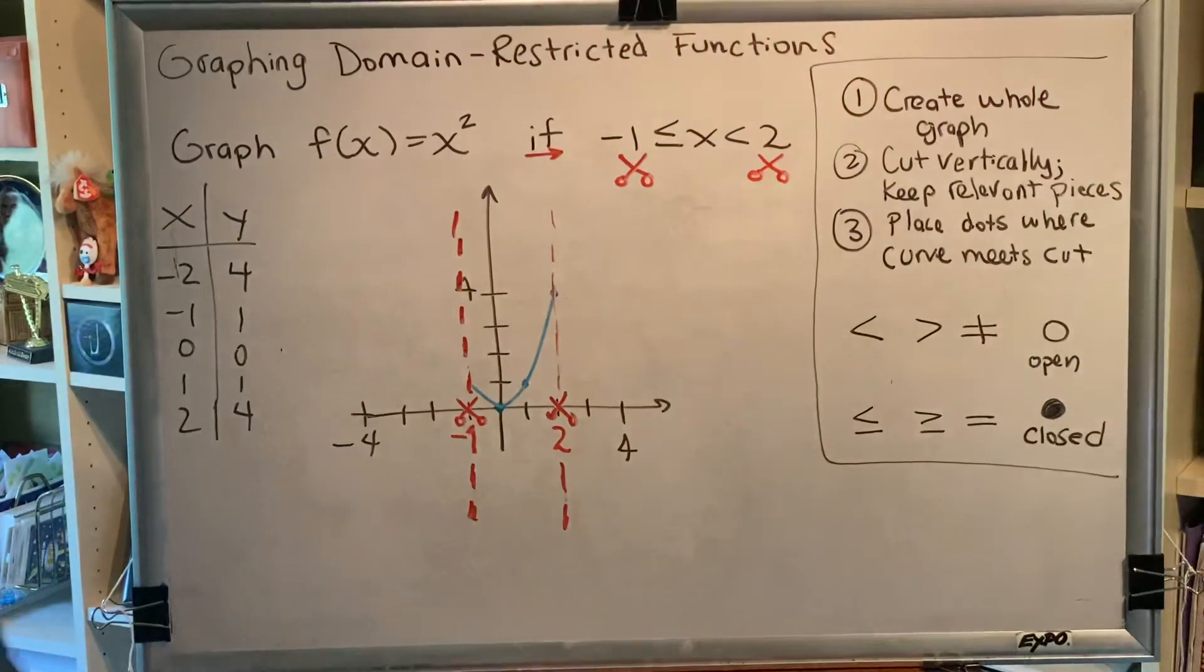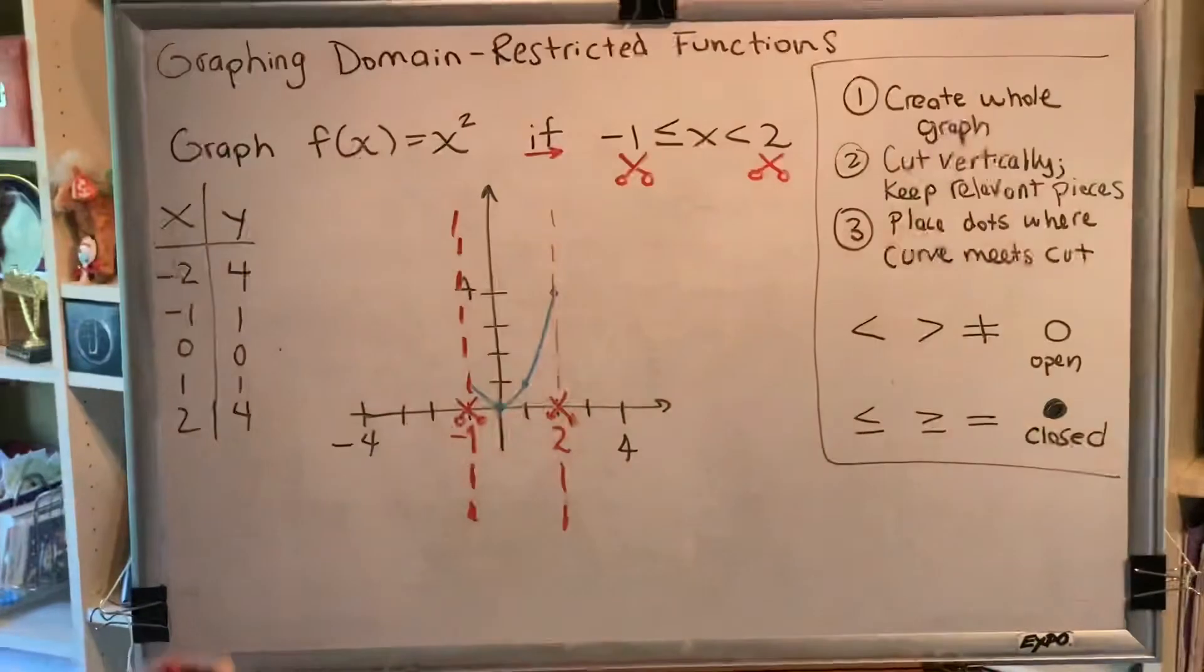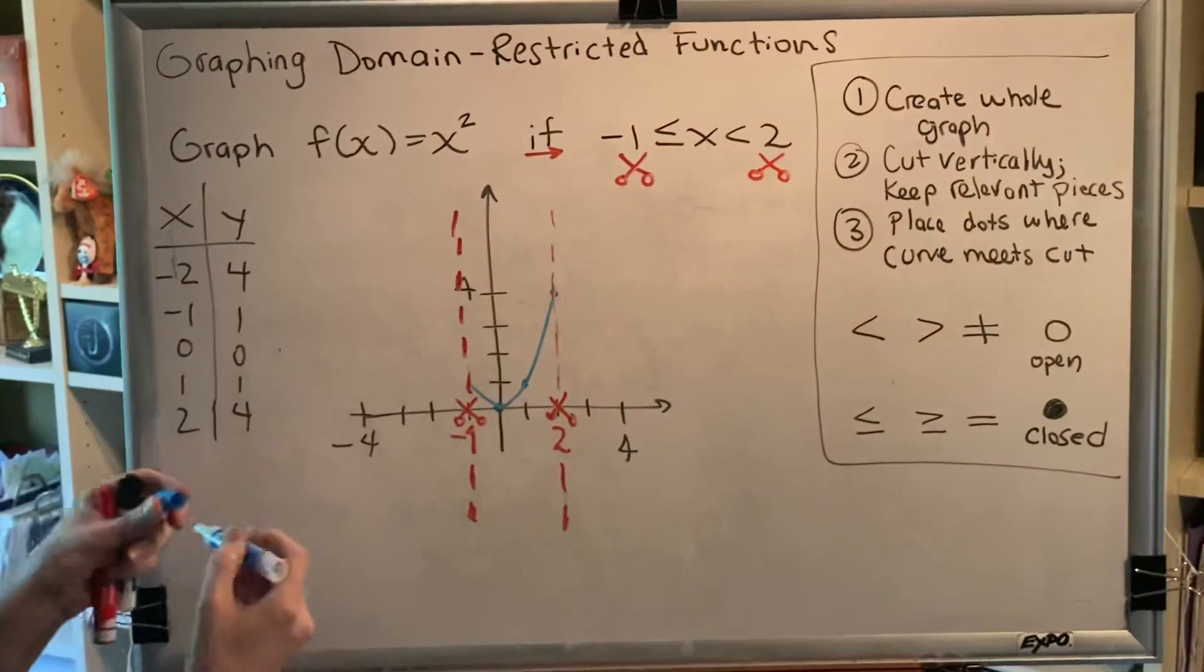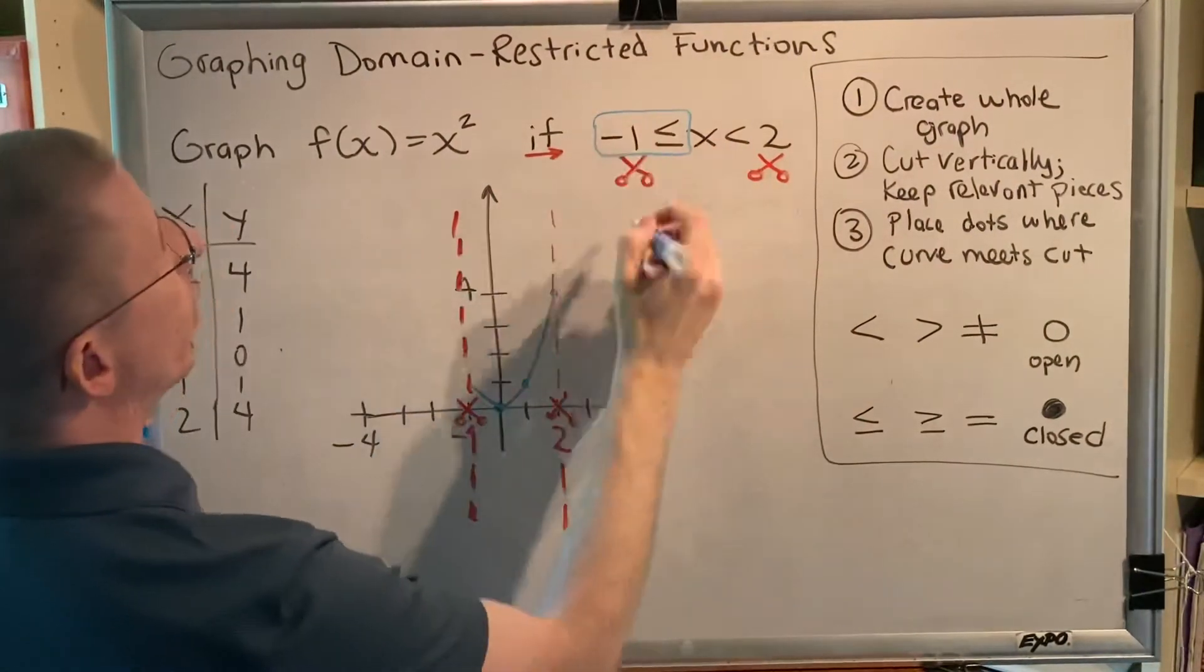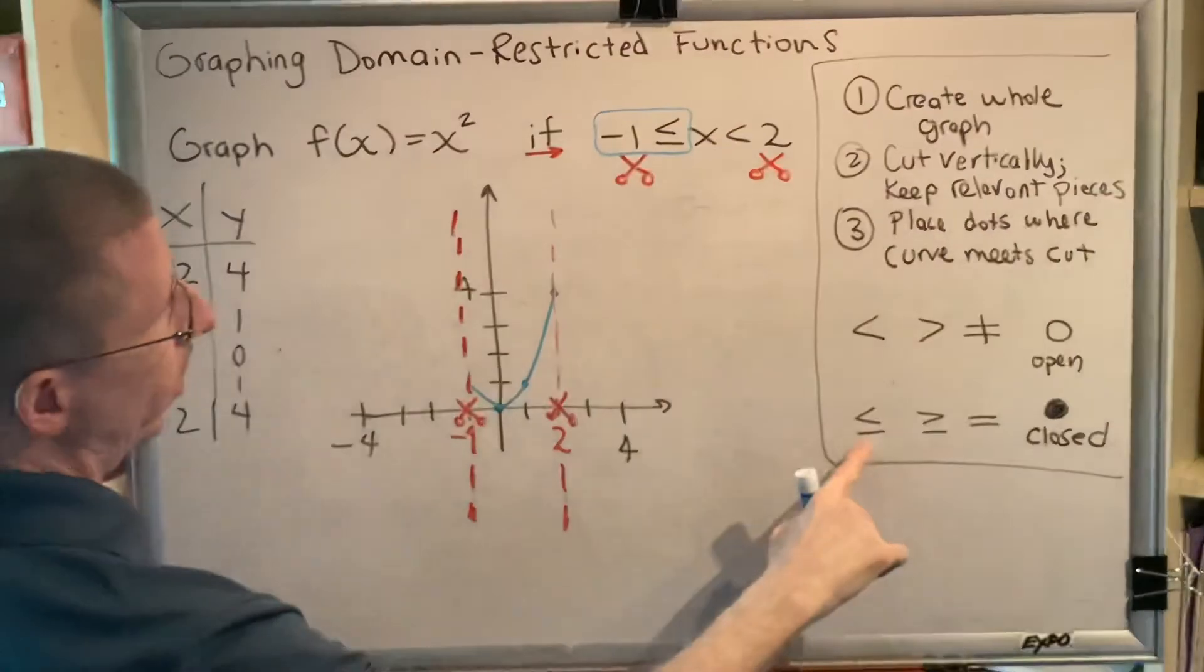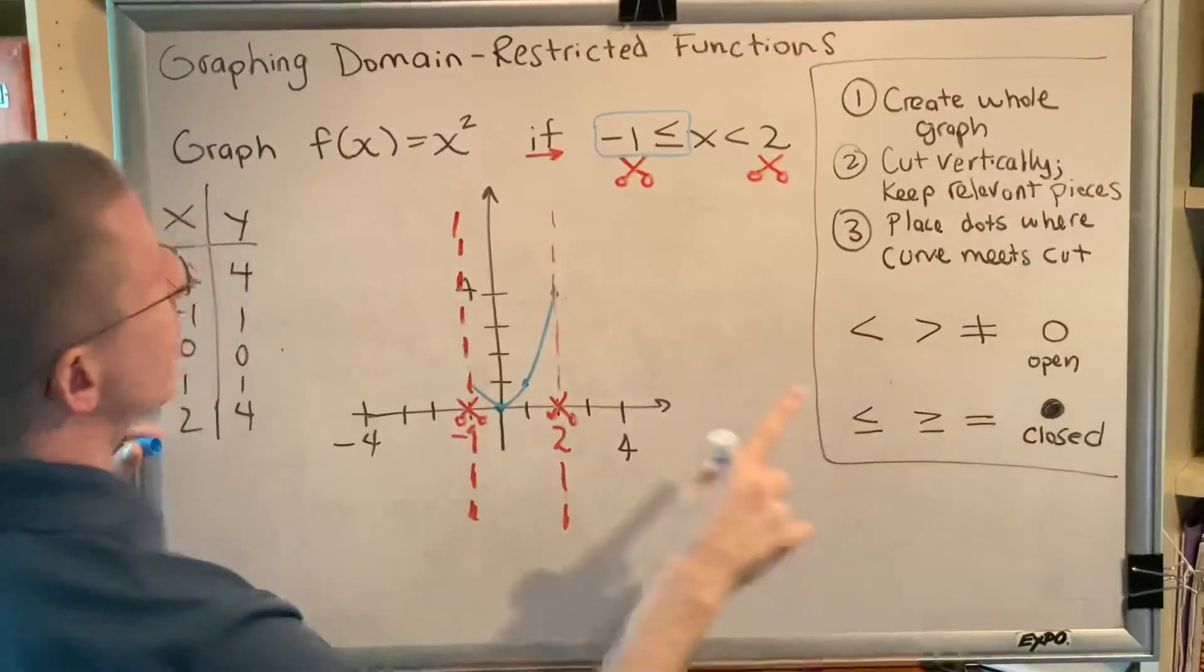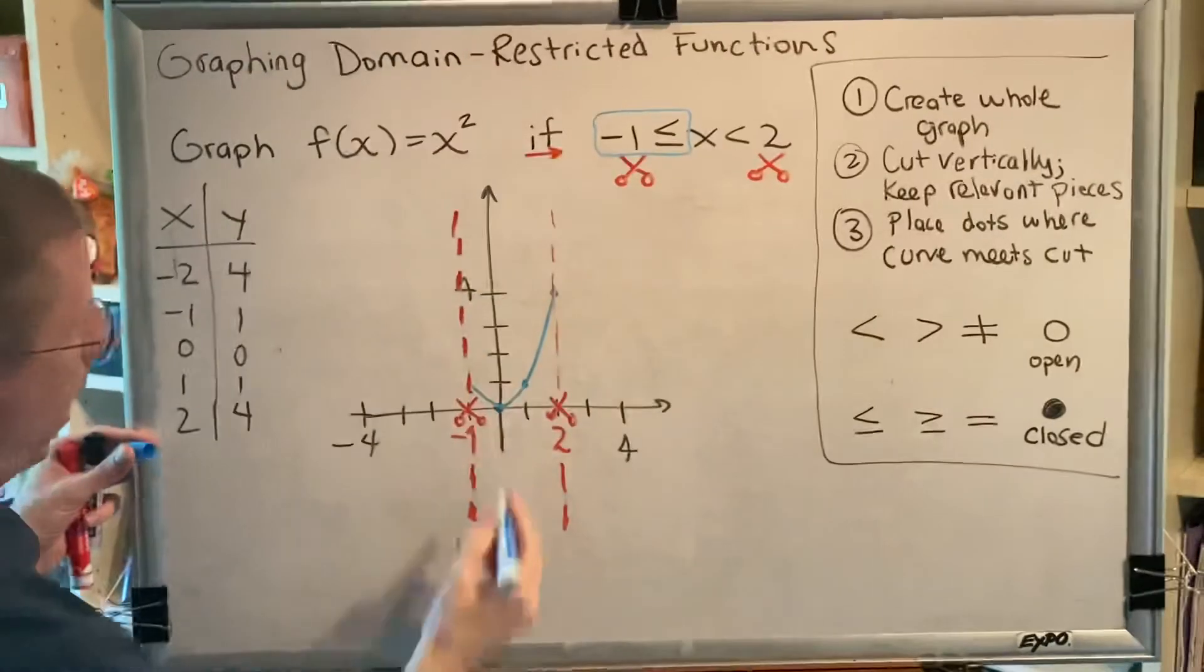Now, finally, we place dots where the curve meets the cut, where the blue curve meets the red cut lines. What kind of dots should we use? Well, at negative 1, the symbol that we see after the word if is less than or equal to. Less than or equal to is a closed dot. So we put a closed dot at negative 1, where the curve meets the cut.